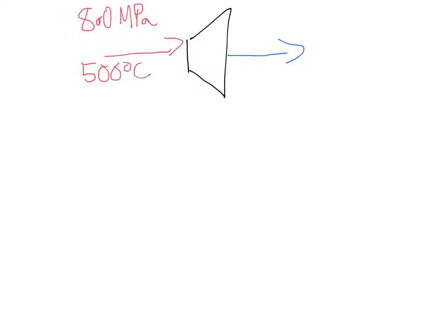So let's say we have the same setup we had before. We have steam coming in at 8 megapascals and 500 degrees C, and then we are going to have the steam leave, instead of at 1 megapascal, we are going to have it leave at a much lower pressure. We're going to have it leave at 0.01 megapascal.